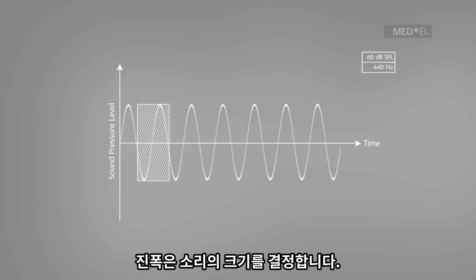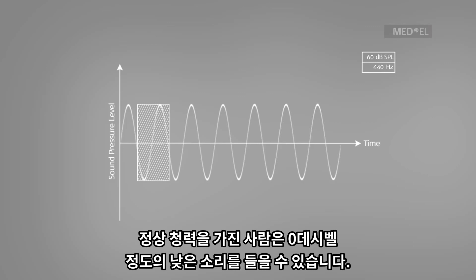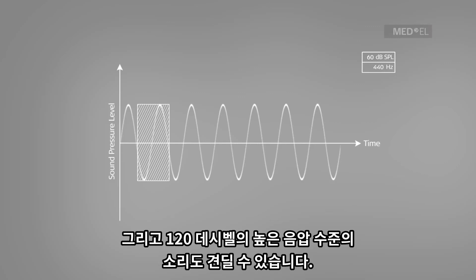The amplitude determines the loudness of a sound. An individual with normal hearing can hear sounds as low as zero decibel sound pressure level and tolerate sounds as high as 120 decibel sound pressure level.